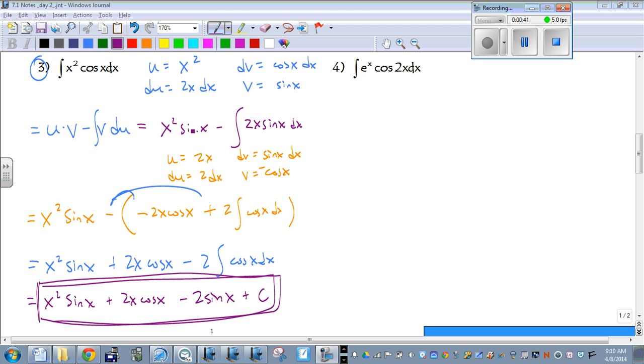So this first part, x squared sine of x stays out in front, minus this integral. So this integral is going to be represented by that integration by parts, so we have to put that in parentheses and we're going to distribute that subtraction to both parts.